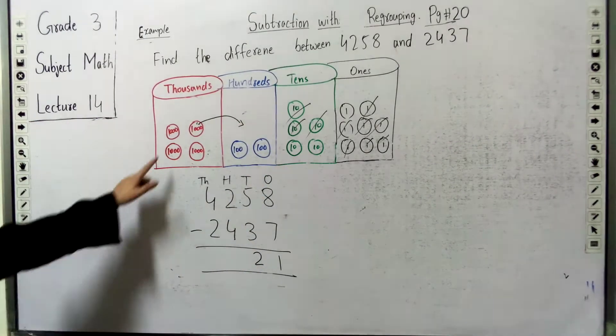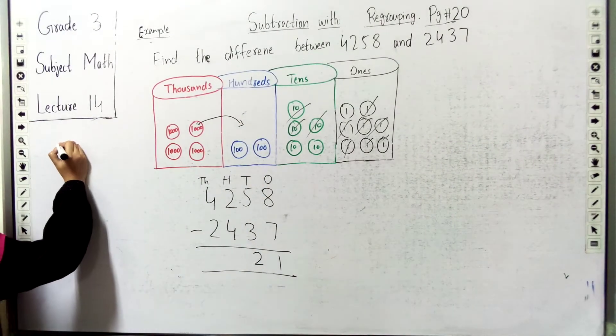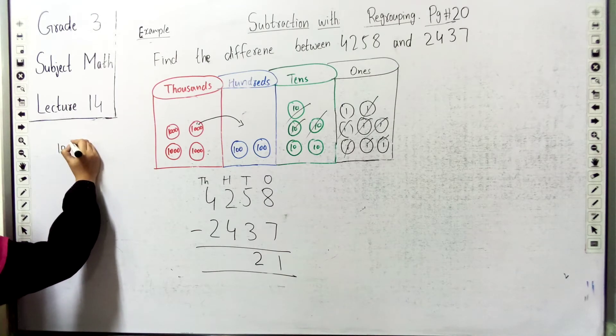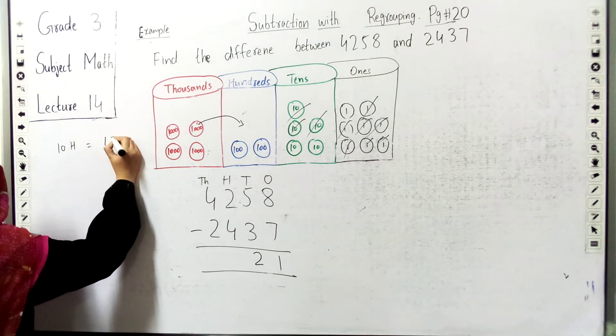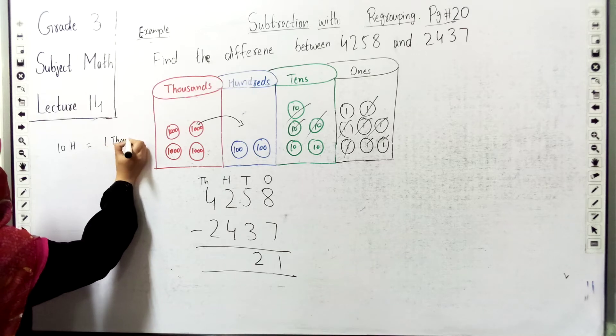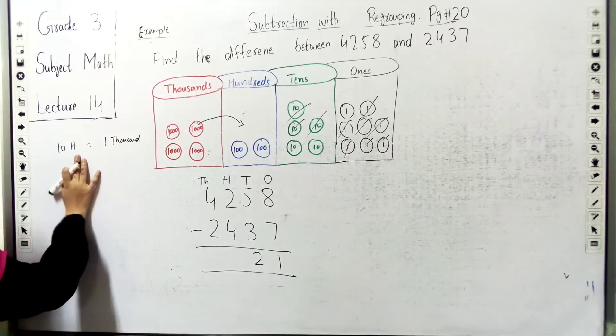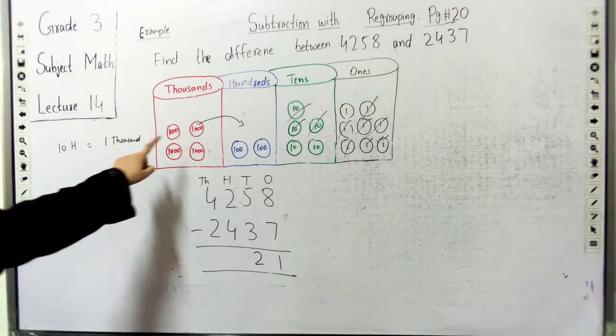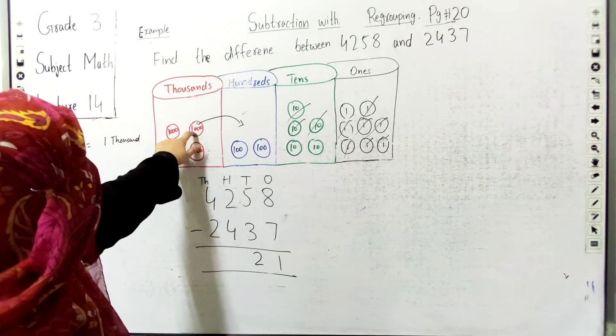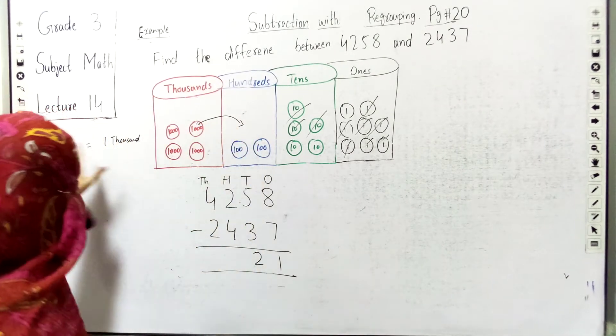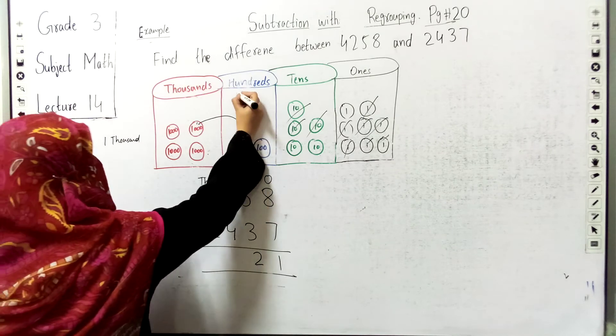We will take 1 block of 1000. Ten hundreds equal one thousand. So this one block is one thousand. Here, ten blocks of hundred will be one thousand. So here you can see.